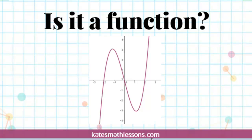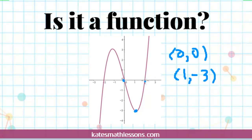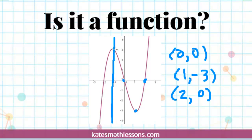Let's look at one more graph to see if it's a function. Writing out some ordered pairs: I see (0, 0), (1, −3), and (2, 0). So far no problems — 0 is assigned to 0, 1 is assigned to negative 3, and 2 is assigned to 0. These are all different input values, each assigned to only one Y value. Using the vertical line test, anywhere I draw a vertical line on this graph, it only hits in one spot. So every X has been assigned to only one Y value, and this one is a function.